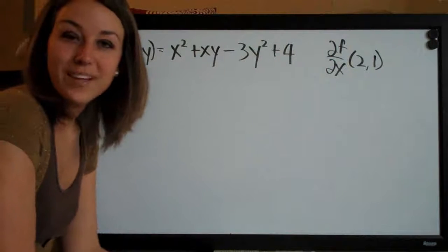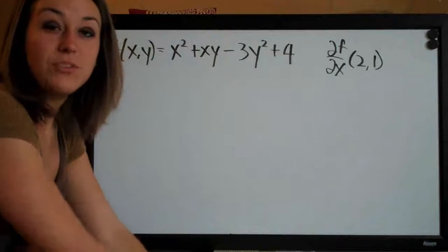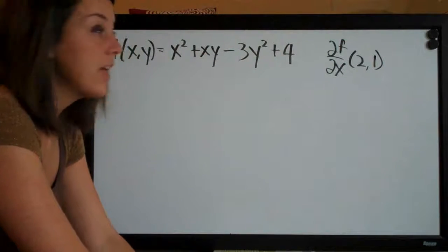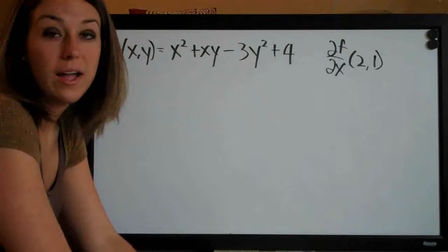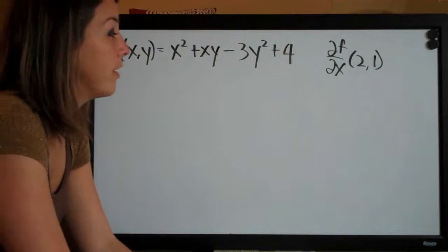Hi everyone! Welcome back to integralcalc.com. We're going to be doing another partial derivatives problem today. This one is the function f of xy equals x squared plus xy minus 3y squared plus 4.